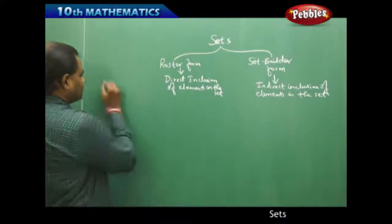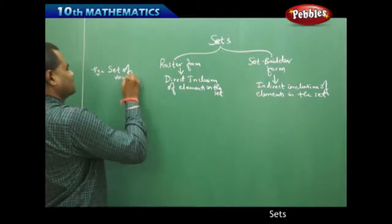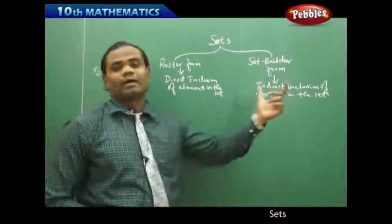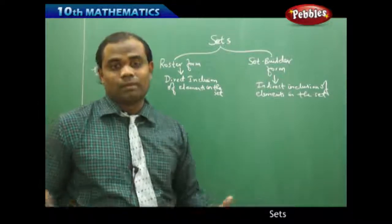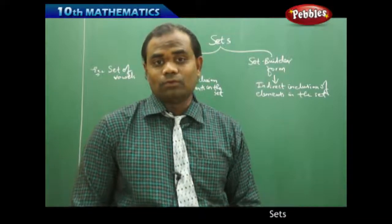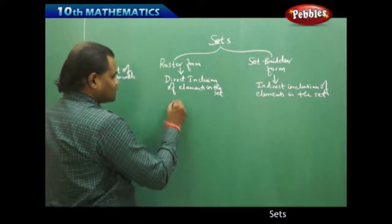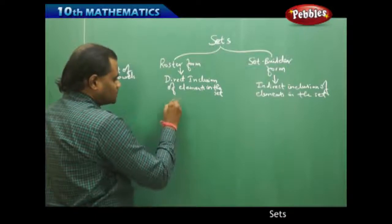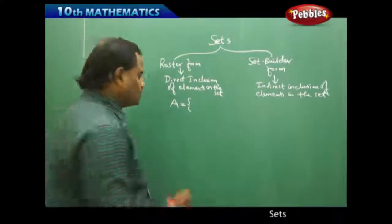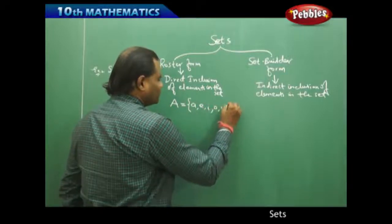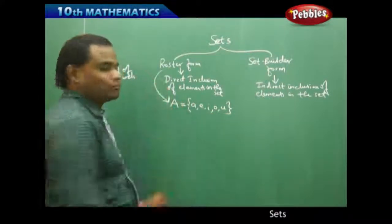Let's take the example of the set of vowels, written both in roster form and set builder form. In roster form, we already know from English that the vowels are A, E, I, O, U — the five alphabets called vowels. The roster form of the set of vowels, which we generally denote as A, lists all vowels directly in the set: {A, E, I, O, U}.